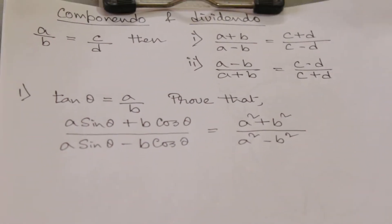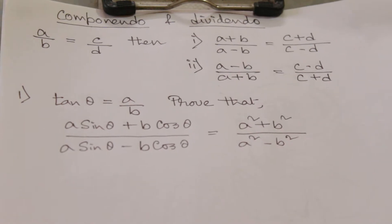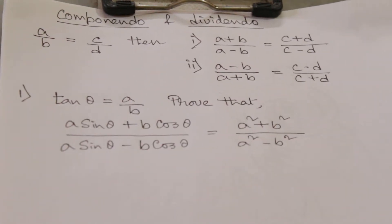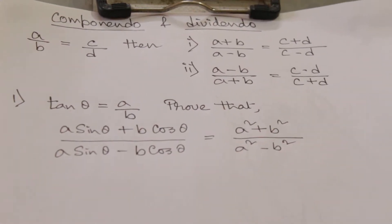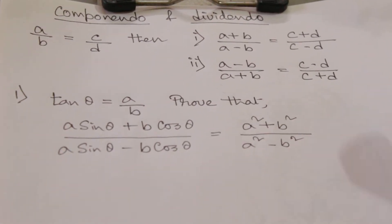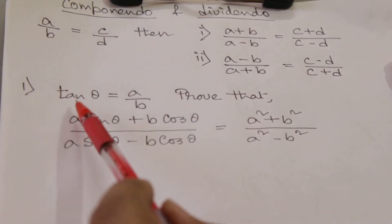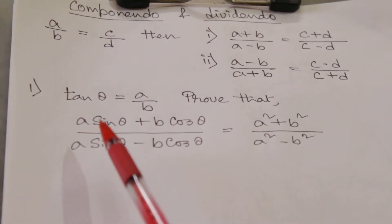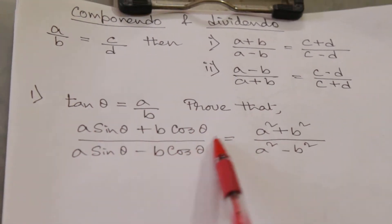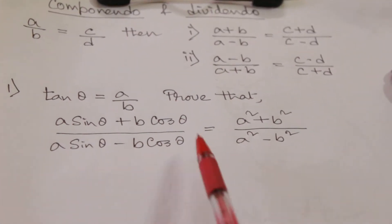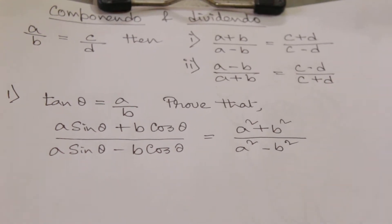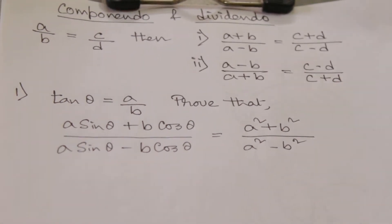Using this formula we will try to solve some problems. Problem number one: if tan θ = a/b, then prove that (a sin θ + b cos θ)/(a sin θ - b cos θ) equals the given expression.